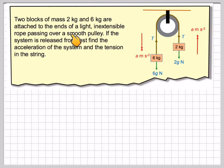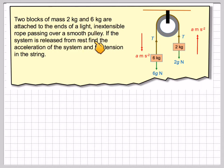Two blocks of mass 2kg and 6kg are attached to the ends of a light, inextensible rope passing over a smooth pulley.